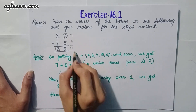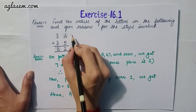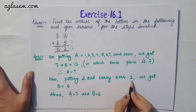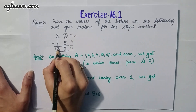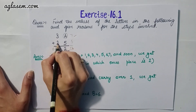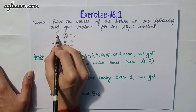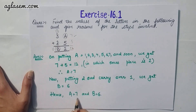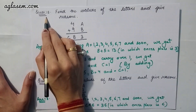Therefore A = 7. Now putting 2 and carry over 1, we get B = 6, because 3 + 2 + 1 (carry) = 6. Hence A = 7 and B = 6.